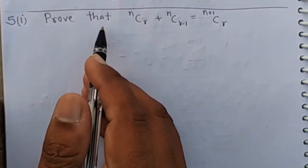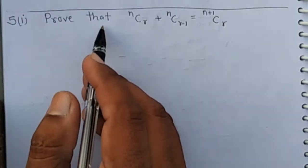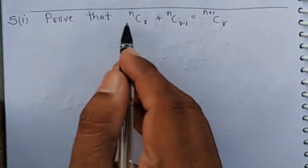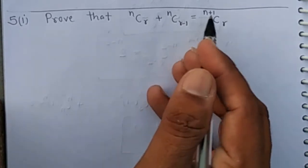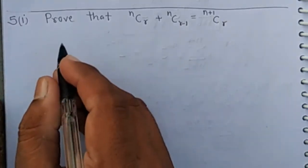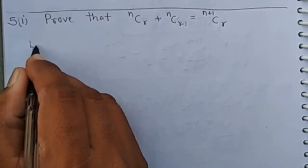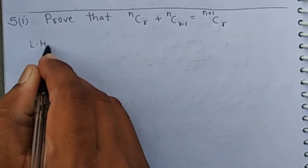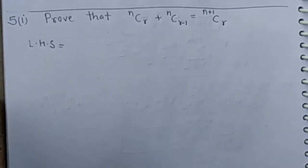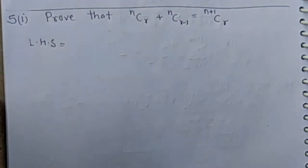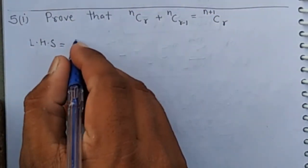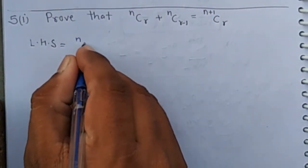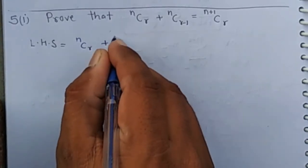Good morning class. It is the first part of question number 5. Prove that nCr plus nCr minus 1 equals n plus 1Cr. Firstly, we take the left hand side equal to nCr plus...